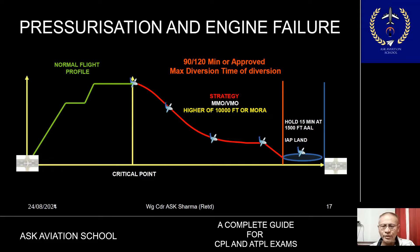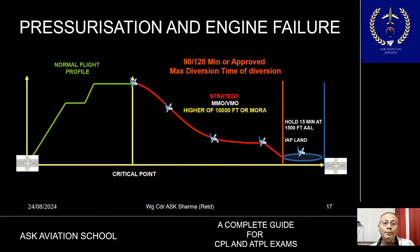The third consideration is the aircraft suffering both pressurization failure and engine failure simultaneously. The aircraft takes off, climbs to normal cruising altitude, and at the critical point it is assumed the aircraft loses one engine and simultaneously loses pressurization. The aircraft carries out an emergency descent to flight level 100 or MORA if higher, then flies at the planned speed schedule — VMO, MMO, or any other operator-specified speed — for 90 or 120 minutes of maximum diversion time, and lands at the suitable alternate.